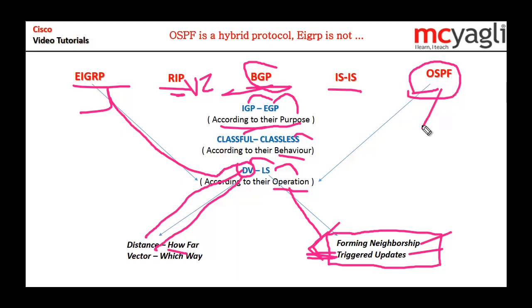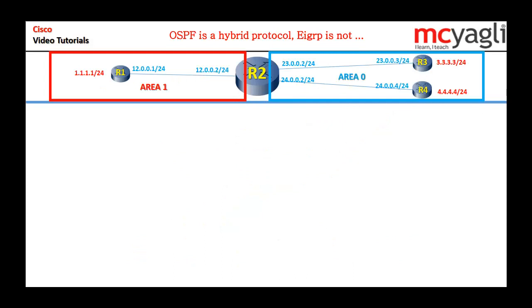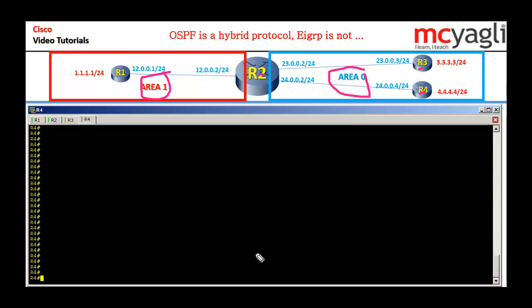First, OSPF operates as link state within an area. I have this topology here: four routers, area 0 and area 1. We know that OSPF operates as link state within an area, and it operates as distance vector between areas. R2, R3, and R4 are in area 0, and R1 and R2 are in area 1.